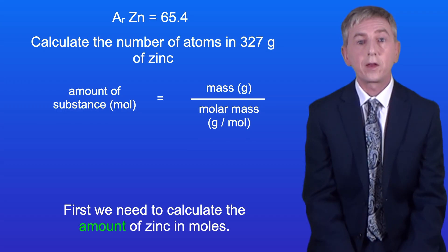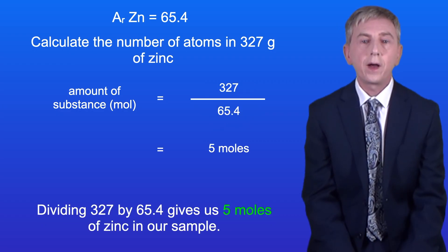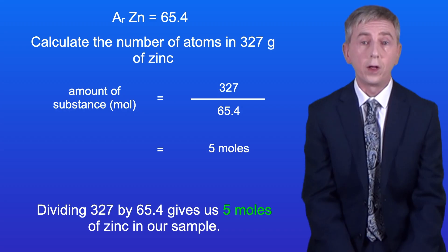Okay so first we need to calculate the amount of zinc in moles. The molar mass of zinc is 65.4 grams per mole. Dividing 327 by 65.4 gives us 5 moles of zinc in our sample.